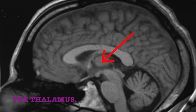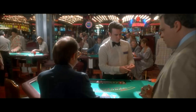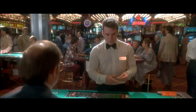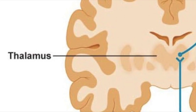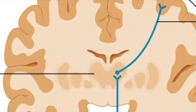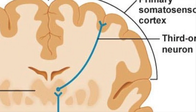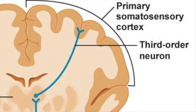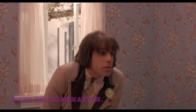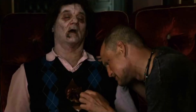The thalamus, as mentioned, is a relay station. It will redistribute the noxious sensory signal from the second-order neurons to the appropriate area of the somatosensory cortex with the help of another neuron - cleverly named the third-order neuron. This way, you can know with accuracy which part of the body you've just injured. This is called pain discrimination.